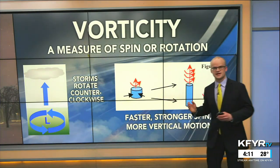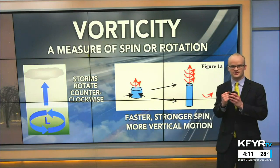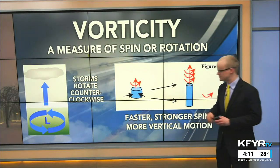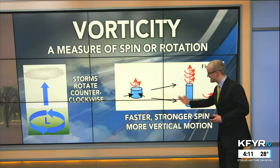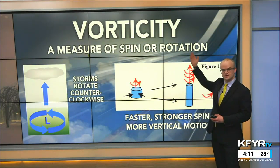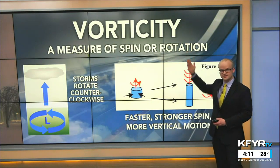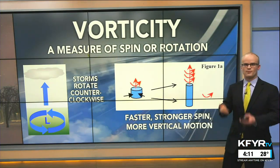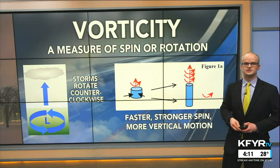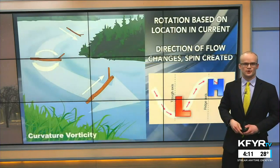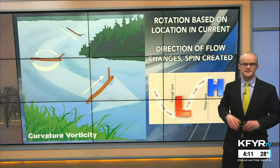It's kind of like the figure skater effect — when you bring your arms in, you rotate a lot faster. So the faster the rotation, the bigger our vorticity values are, which means there's a lot more vertical motion in the atmosphere, more storminess, and usually more precipitation.